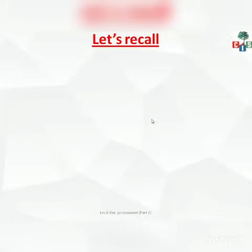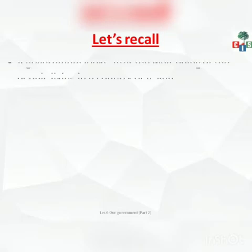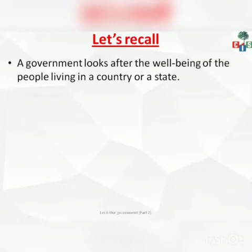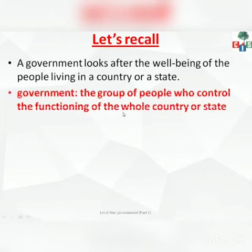So children, we will start first by recalling what we have seen in the last video. In the last video, we have seen what is government — a government looks after the wellbeing of the people living in a country or a state. There can be a state government or a central government. The government is the group of people who control the functioning of the whole country or state.